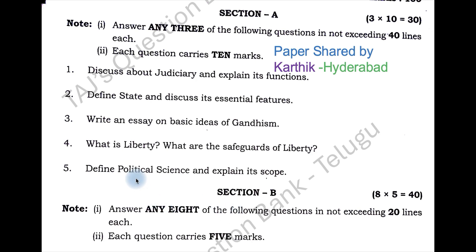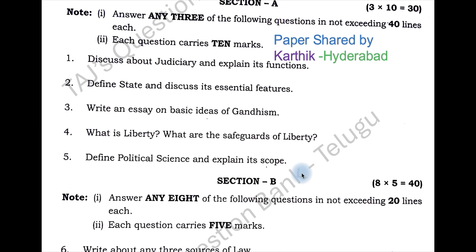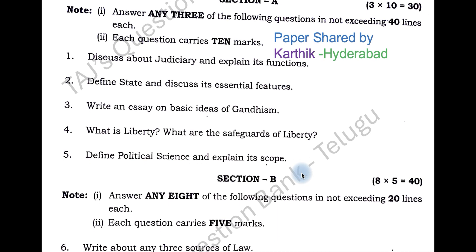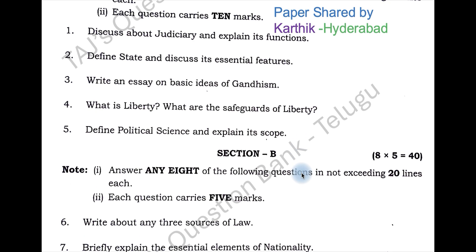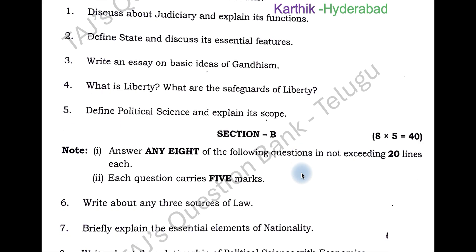What are the questions that we got? Define state and discuss its essential features. Write an essay on basic idea of Gandhism. What is liberty? Define political science and explain its scopes. All these questions were there in the top eight questions. So 50% questions have come in your exam — best of luck for the students who have prepared accordingly.